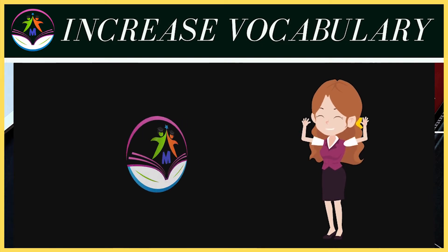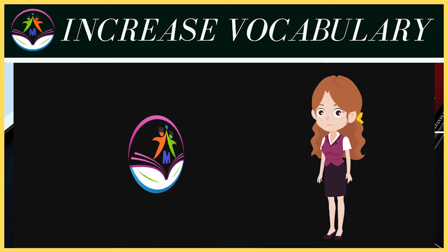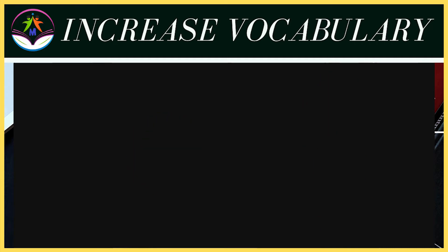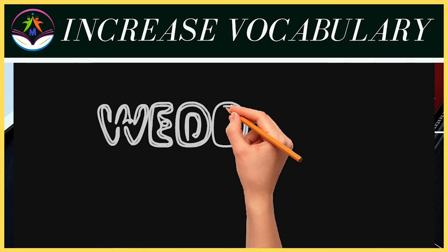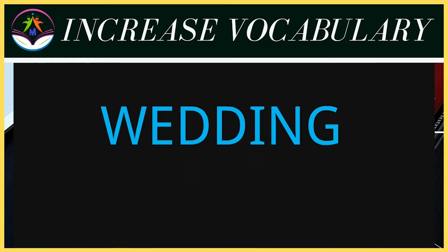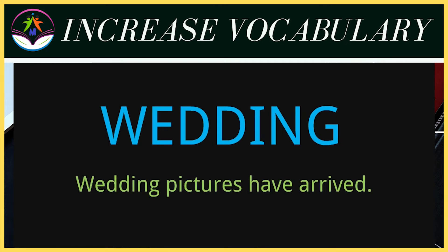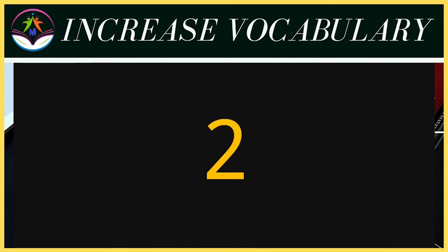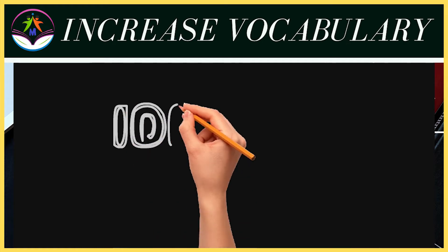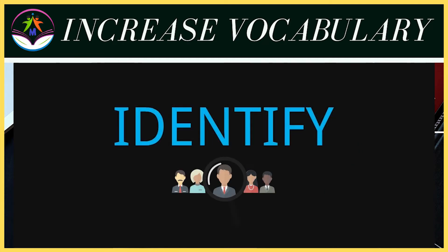Good morning students, I hope you all are fine. तो बच्चों चलिए आज के आपके 5 new English words start करते हैं। Our first word for today is 'wedding'. Wedding का meaning होता है शादी। आईए जानते हैं इसको हम sentence में कैसे use करेंगे — 'Wedding pictures have arrived.' शादी की तस्वीरें आ चुकी हैं।